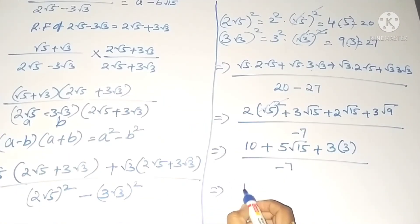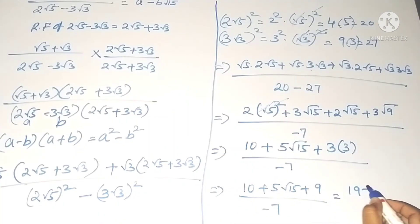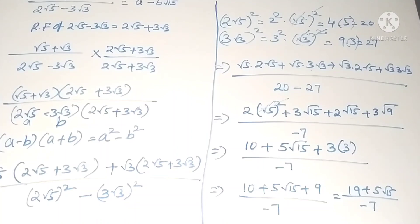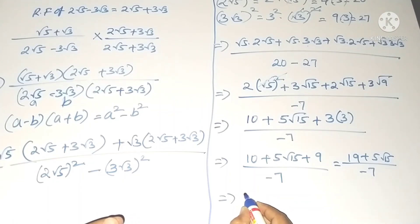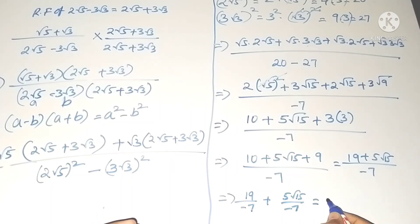So we have (19 + 5√15) / (−7). Giving each term the denominator: 19/(−7) + 5√15/(−7), which equals −19/7 − (5/7)√15.